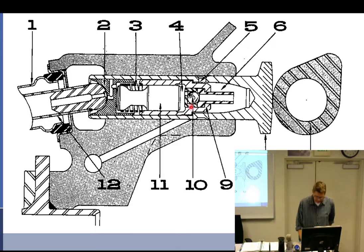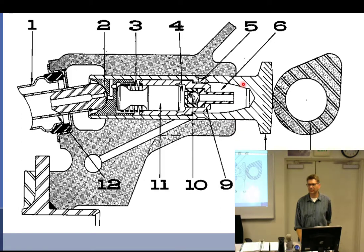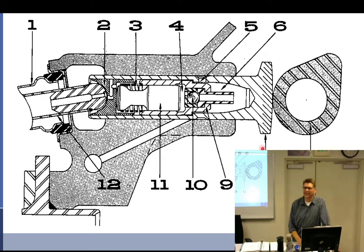Oil under pressure inflates the lifter through the oil gallery, through the hole in the tappet body, past the ball check valve, inflating the cylinder until the plunger pushes on the push rod. The hydraulic unit sits inside the tappet body. One absolute no-no: do not use a magnet to pull these out, because it will magnetize the ball and it won't seat properly, causing oil pressure loss.